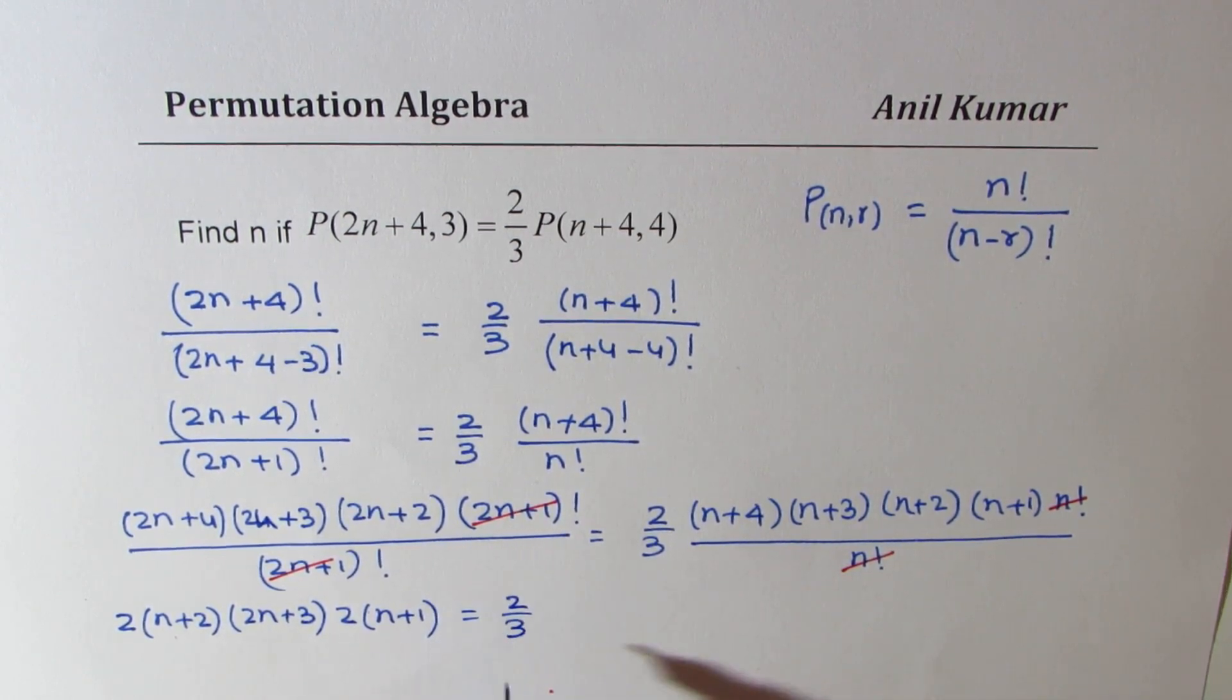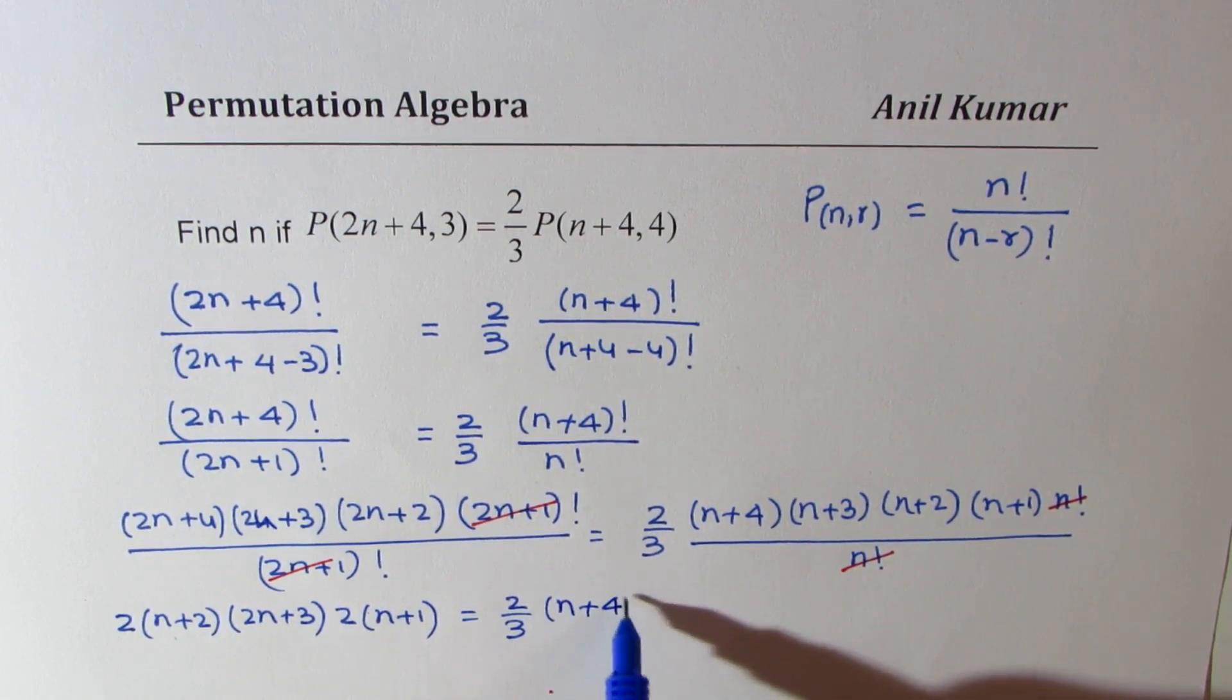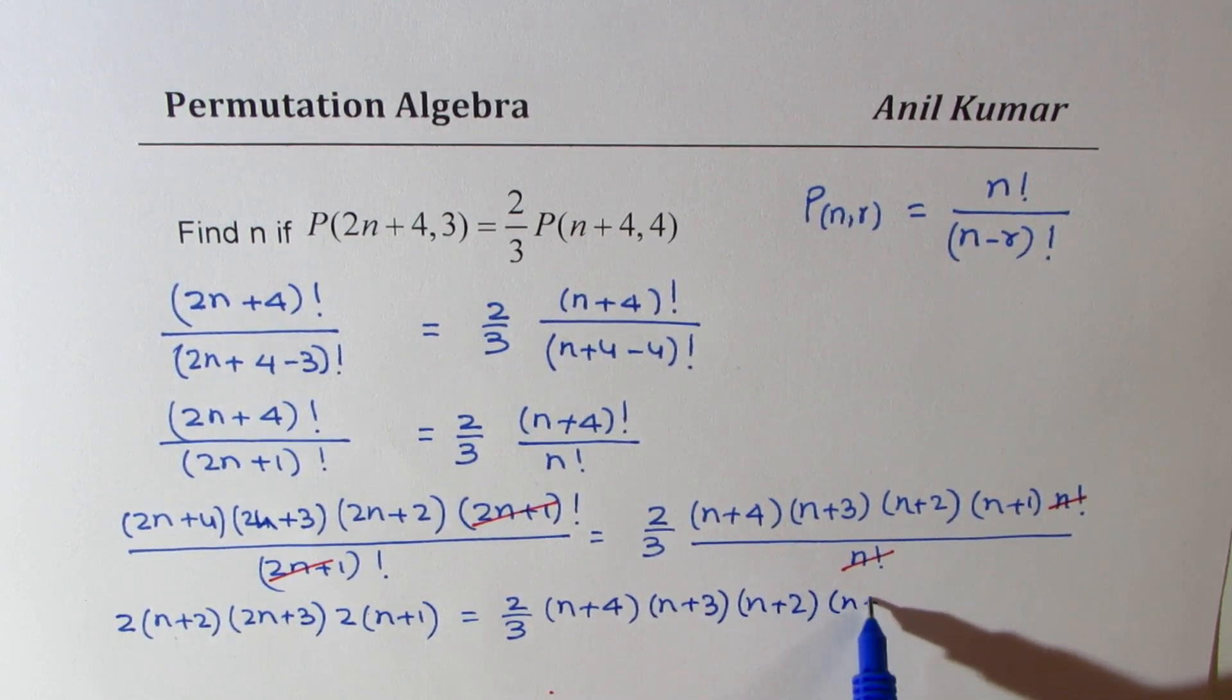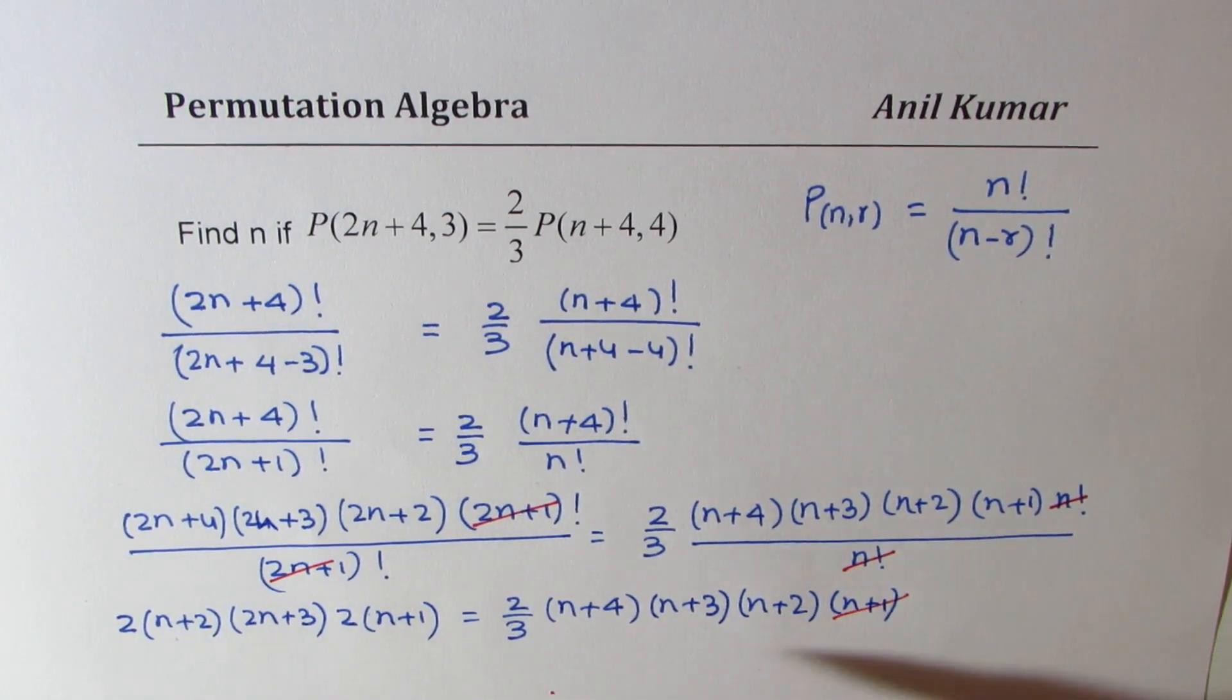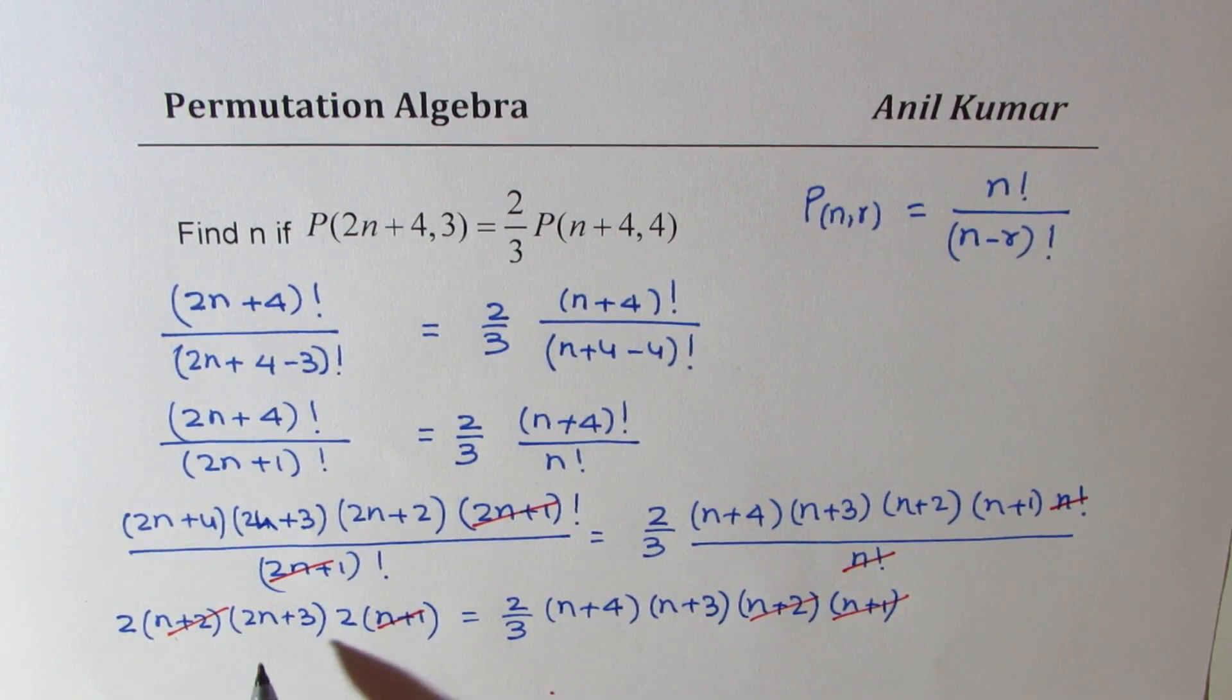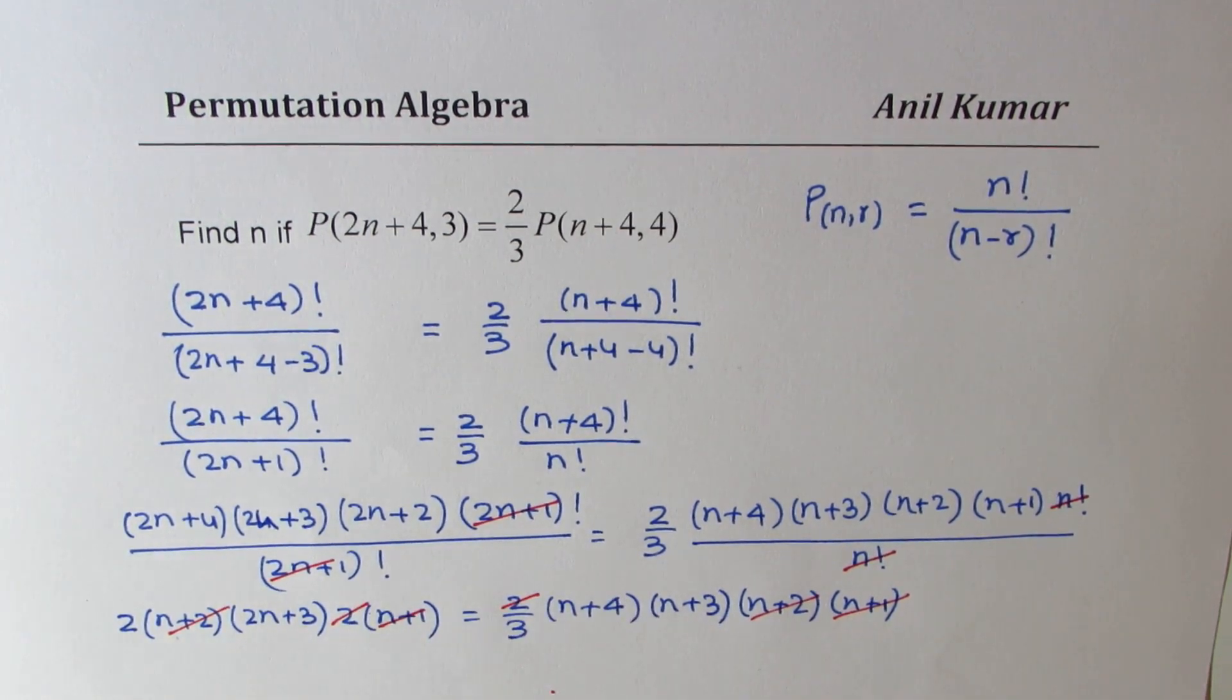This equals 2/3 times (n+4) times (n+3) times (n+2) times (n+1). Now let us cancel the terms which can be cancelled from left and right side. So you are left with 2n+3. You can also cancel one of the 2s.